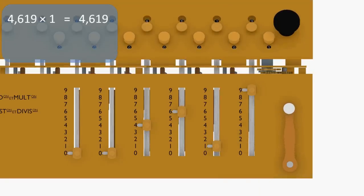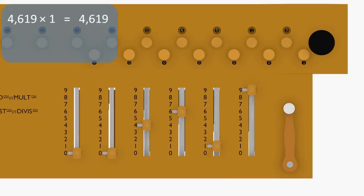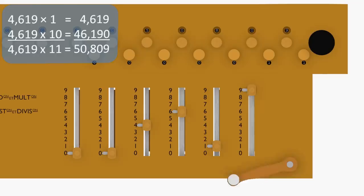Shift the carriage one column to the right, so the accumulator tens digit is aligned with the lowest order input column, and turn the crank one more time.